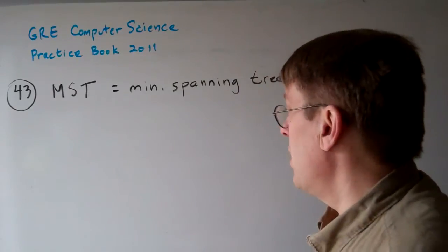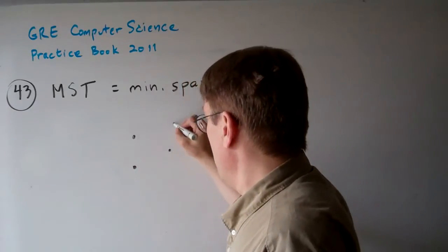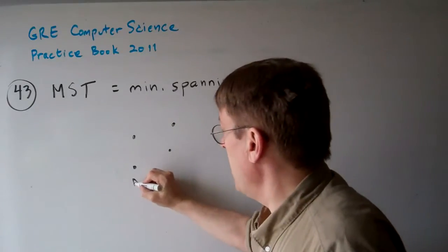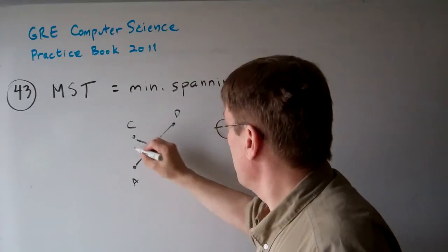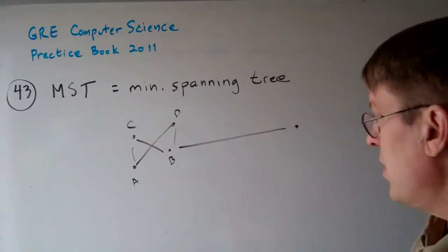Well, let's consider a minimum spanning tree. If we have, let's say it's A, B, Z, D. Okay, this is our graph and we want the minimum spanning tree.